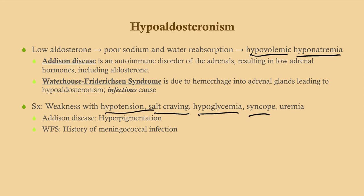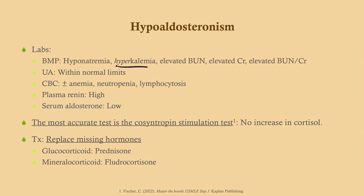In Addison's disease you may see hyperpigmentation, due to elevated ACTH acting indirectly via melanocyte-stimulating hormone. Waterhouse-Friderichsen syndrome — look for a history of meningococcal infection. Labs: expect hyperkalemia, because as sodium is lost, potassium is pulled into the bloodstream. The history will help you the most. The most accurate test is the cosyntropin stimulation test — if the adrenals don't respond with increased cortisol, they're not working.